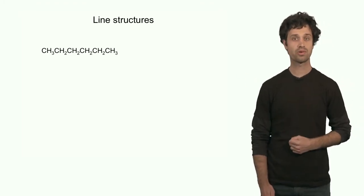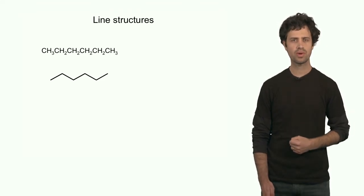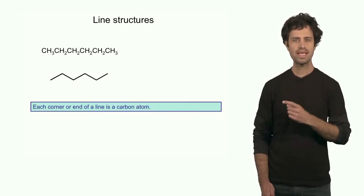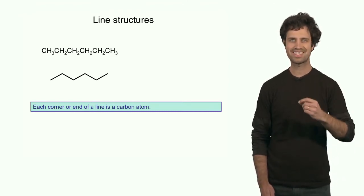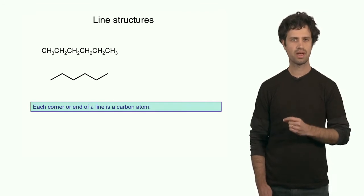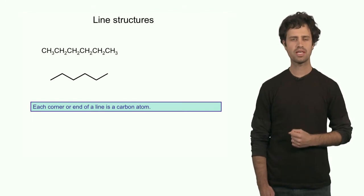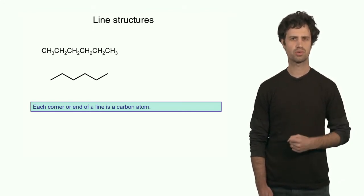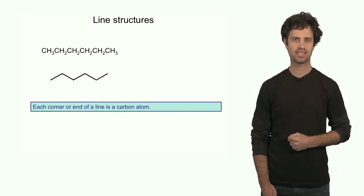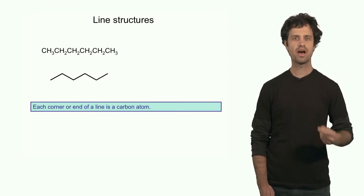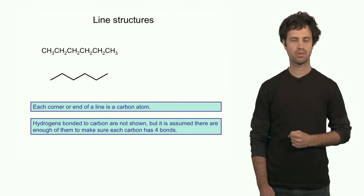For this condensed structural formula, the corresponding line structure is drawn as follows, assuming two rules. First, each endpoint of a line and each corner represents a carbon atom — we don't explicitly write C, but we assume that each corner and each endpoint is a carbon atom. Second, to keep the structure clean, we leave out all the hydrogens that are bonded to carbons. We assume that there are enough of them such that each carbon atom has four bonds, because that is a criterion we have to fulfill.